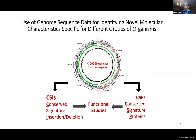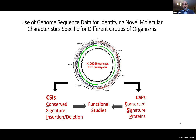The main focus of our work has been aimed at using genome sequences to identify novel molecular markers or characteristics that are specific for different groups of organisms. In my lab, we have pioneered the studies and discovery of two types of molecular markers. One of them we refer to as conserved signature inserts or deletions, or CSIs, and the others are conserved signature proteins. I will briefly indicate what these two types of markers are and how they are useful for understanding different types of organisms.